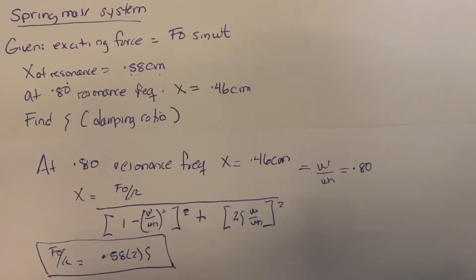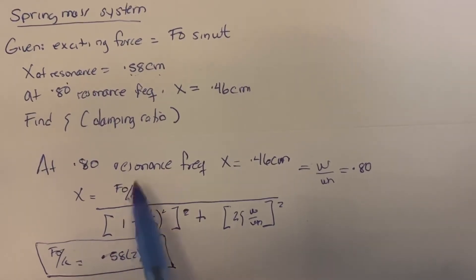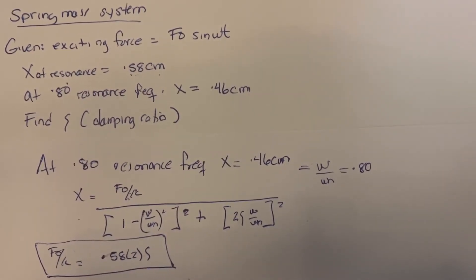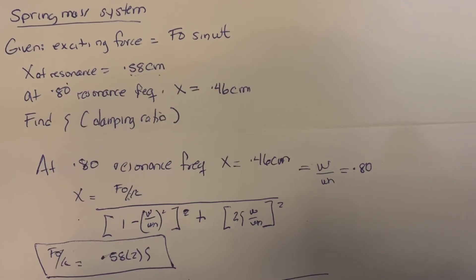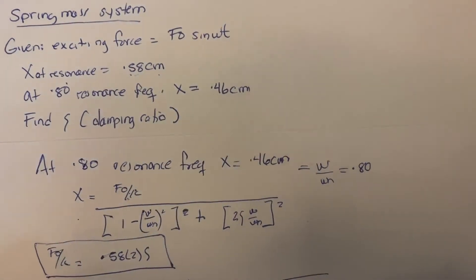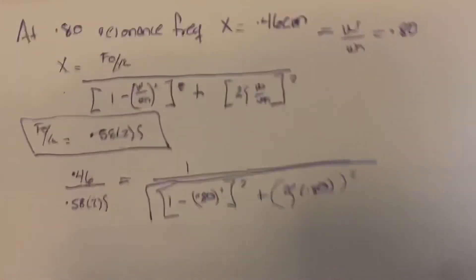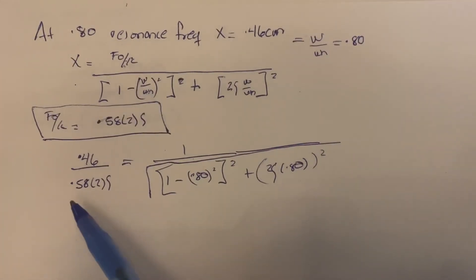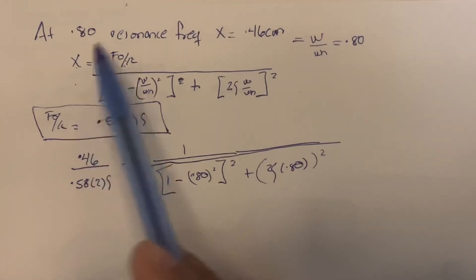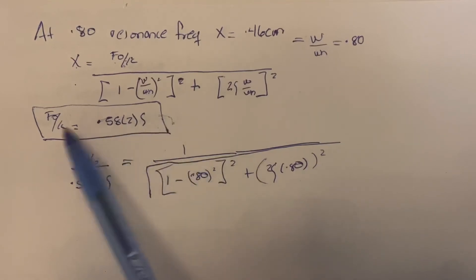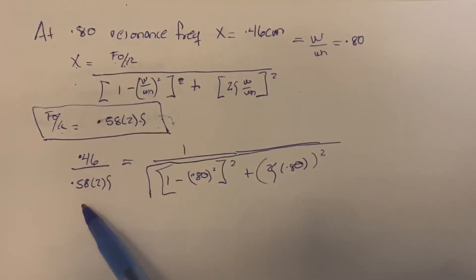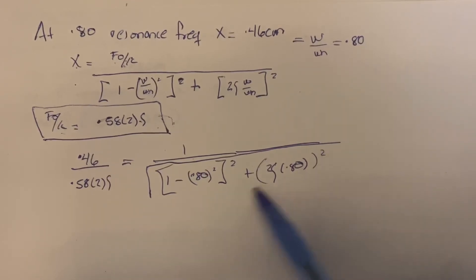Substituting the values, 0.46 divided by (0.58 times 2 times damping ratio) equals 1 over the square root of (1 minus 0.80 squared) squared plus (2 times damping ratio times 0.80) squared. To eliminate the square root, we square both sides of this expression.